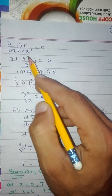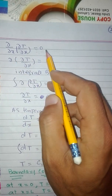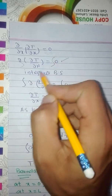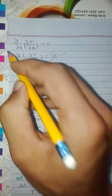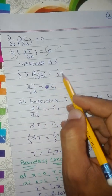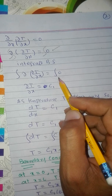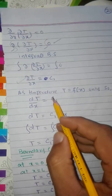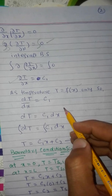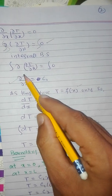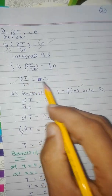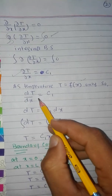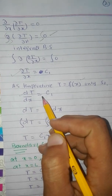We can simplify equation 3 by multiplying through by d/dx, which gives zero, and then integrating. The integration of zero gives a constant C1. Since temperature changes only in the x direction, we use the ordinary differential equation: dT/dx equals C1.